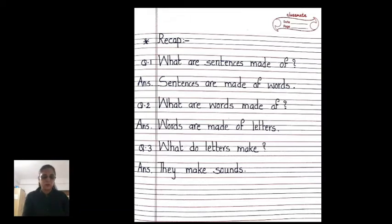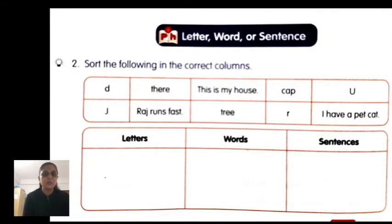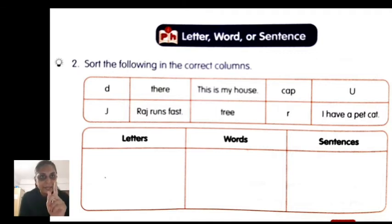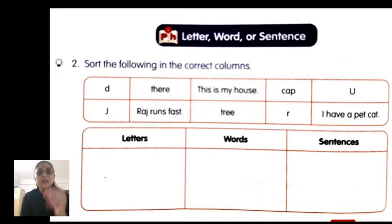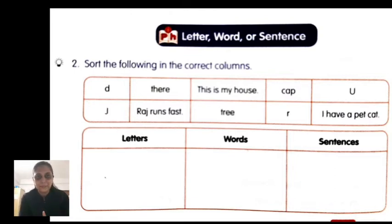Now open your Worksheet 12, go to Question 2. Sort the following into the correct columns. In the bracket: d, this is my house, cap, u, j, Raj runs fast, tree, are, I have a pet cat. If it is a letter, write in the letter column; if it is a word, write in the words column; and if it is a complete sentence — which starts with a capital letter and ends with a full stop — write it in the sentence column. Do it!